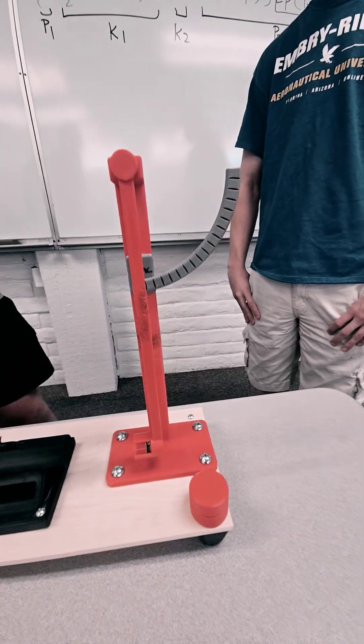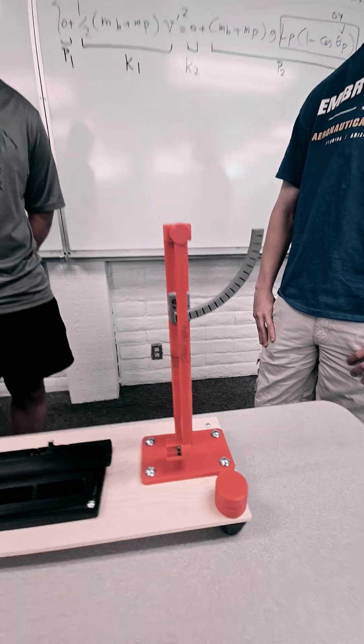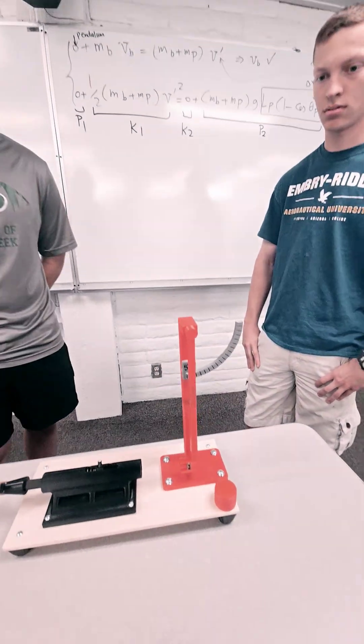The ball and the pendulum move together and the pendulum goes up to so many degrees from which you can calculate the velocity of the ball before impact.